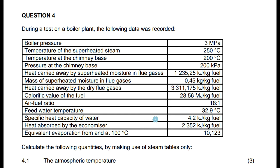During a test on the boiler plant, the following data was recorded. They gave us the boiler pressure, temperature of the superheated steam, temperature at the chimney base, pressure at the chimney base, heat carried away by the superheated moisture in the fuel gases, mass of superheated moisture in the fuel gases, heat carried away by the dry fuel gases, calorific value of the fuel, air-fuel ratio, feed water temperature, specific heat capacity of water, heat absorbed by the economizer, and equivalent evaporation from and at 100 degrees Celsius.